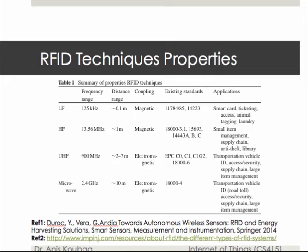High frequency (HF) RFID operates in the band from 3 to 30 MHz, but most systems operate at 13.56 MHz with a read range between 10 cm and 1 meter. They have moderate sensitivity to interference. HF RFID is used in ticketing systems, payment, and data transfer applications. A related technology is near field communication (NFC), a short-range technology commonly used for data exchange between devices.